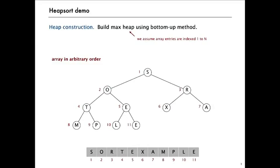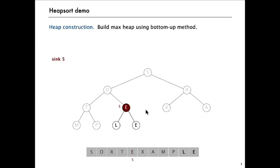Let's take a demo of how Heapsort works. We're going to use a bottom-up method — we start with an array in arbitrary order, then work from the bottom up to make sure it's heap ordered. All nodes with no children are already heap ordered, being of size one. The first one we have to worry about is the root node whose children are heap ordered — it's a small heap of size three that may not be heap ordered. In this case it's not because one of the children is larger. We have a lot of one-node heaps, and then we perform the sink operation on node five, which is just exchanging it with its parent.